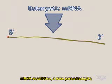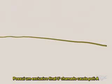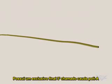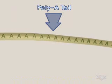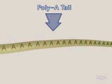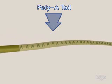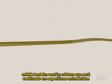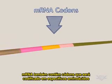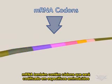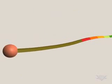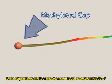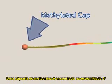Eukaryotic mRNA, the substrate for translation, has a unique 3' end called the poly-A tail. mRNA also contains codons that will encode for specific amino acids. A methylated cap is found at the 5' end.